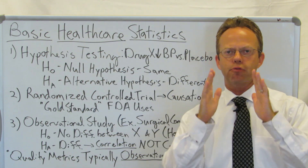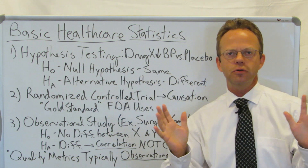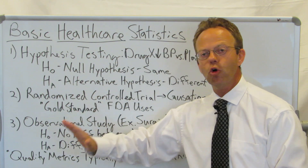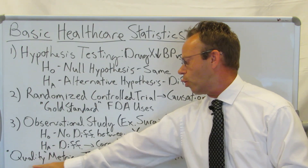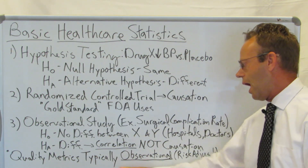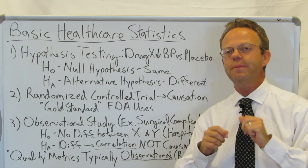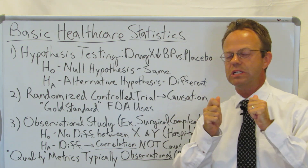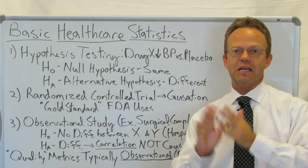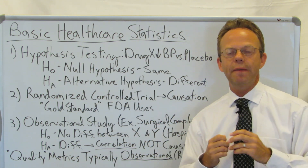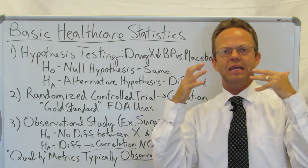Why is this specifically practical to healthcare finance? In the news, healthcare quality is constantly discussed — quality metrics are typically measured through observational studies. They typically do not randomize patients between two hospitals or two surgeons. So in fact, a particular surgeon or doctor may appear to have worse outcomes because we're actually measuring something else.